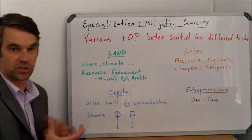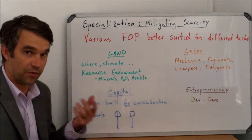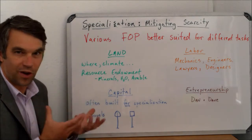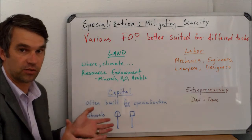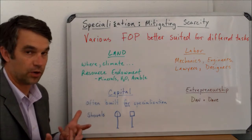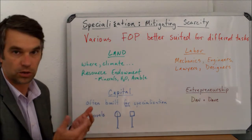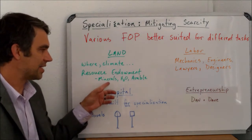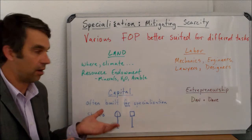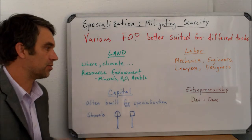Another thing to think about is what we call the resource endowment. An endowment is like a gift — it's something that you're given, you haven't really earned it. A resource endowment refers to what are the things that just happen to be in a certain chunk of land. Here in South Africa, we have lots of very valuable minerals throughout the last 100 or 200 years of history — gold and now titanium. That's not something South Africa earned; it just happens to be there, so it's obviously a valuable economic activity the country can pursue.